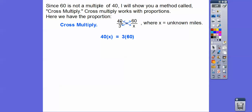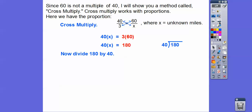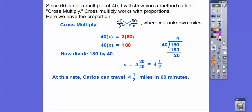Cross multiplying: forty times x equals three times sixty, which gives us forty x equals one hundred eighty. To solve, divide one hundred eighty by forty. Forty goes into one hundred eighty four times with twenty left over — that's four and twenty-fortieths, or four and a half. Carlos travels four and a half miles in sixty minutes.